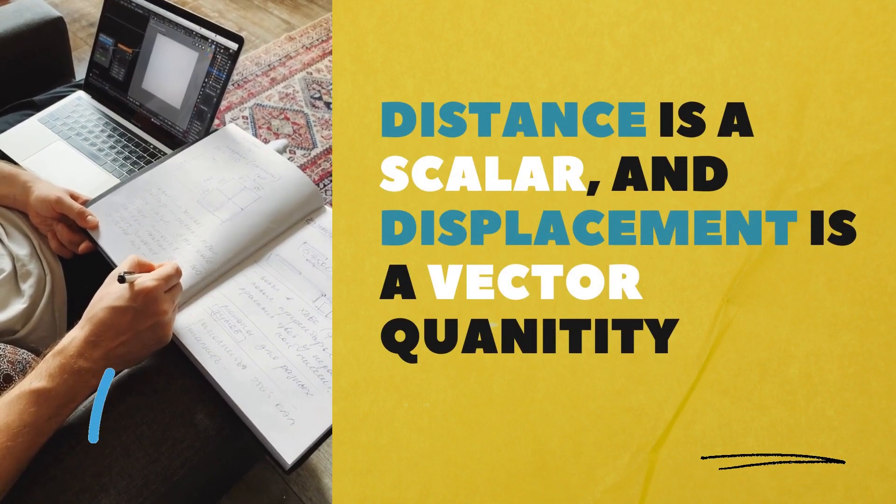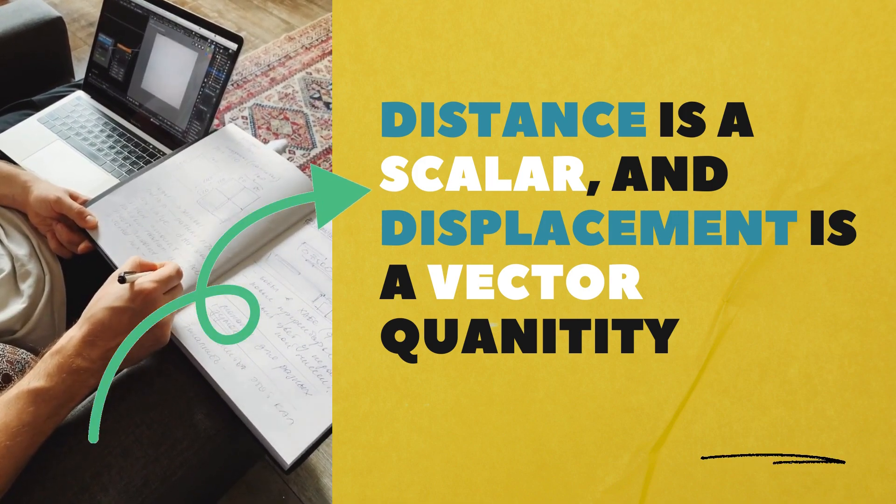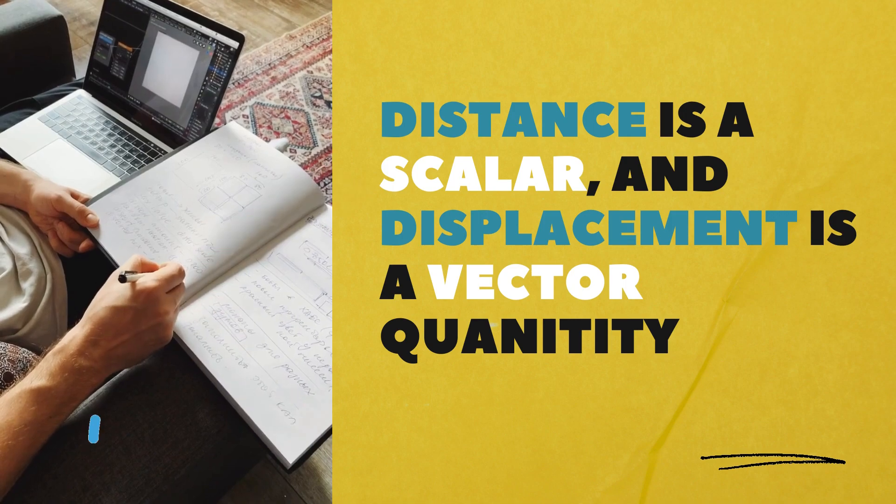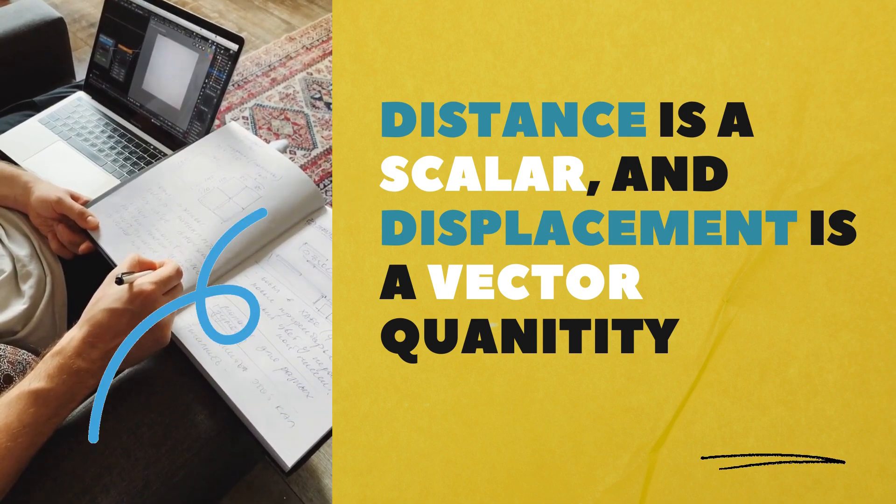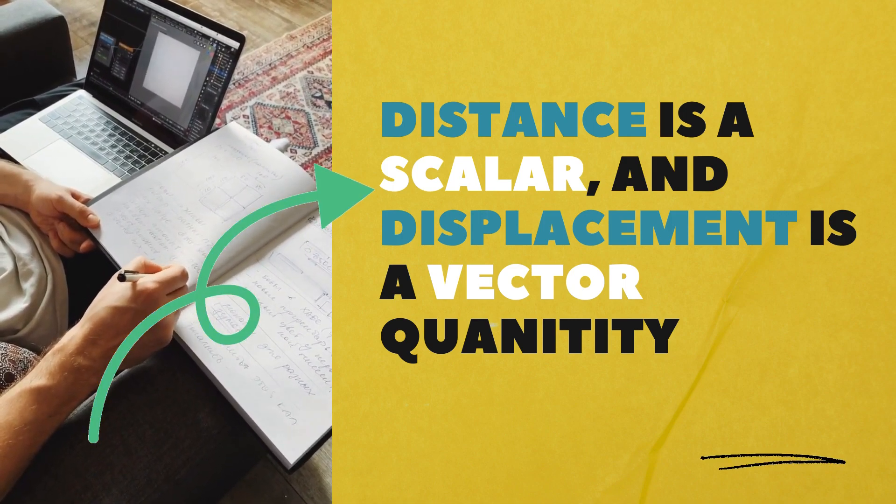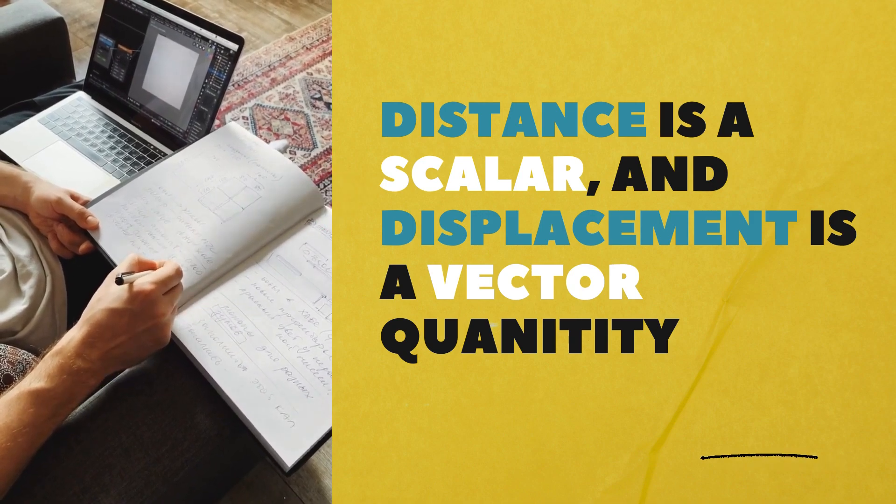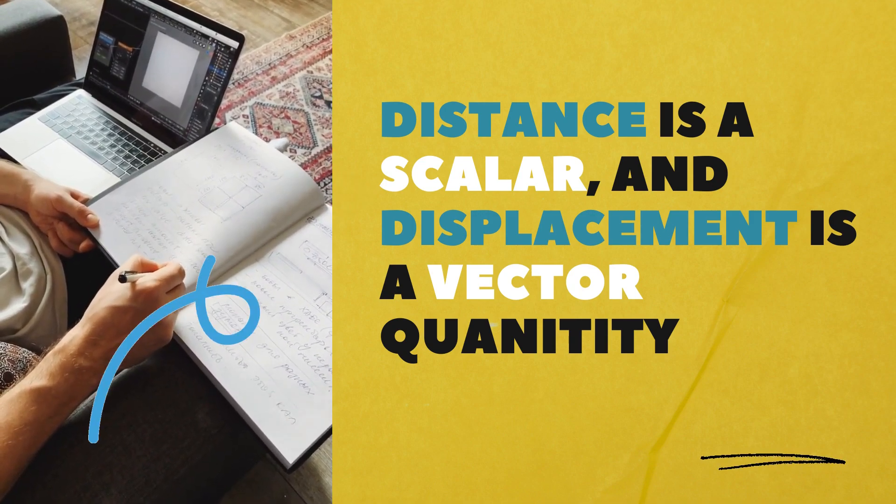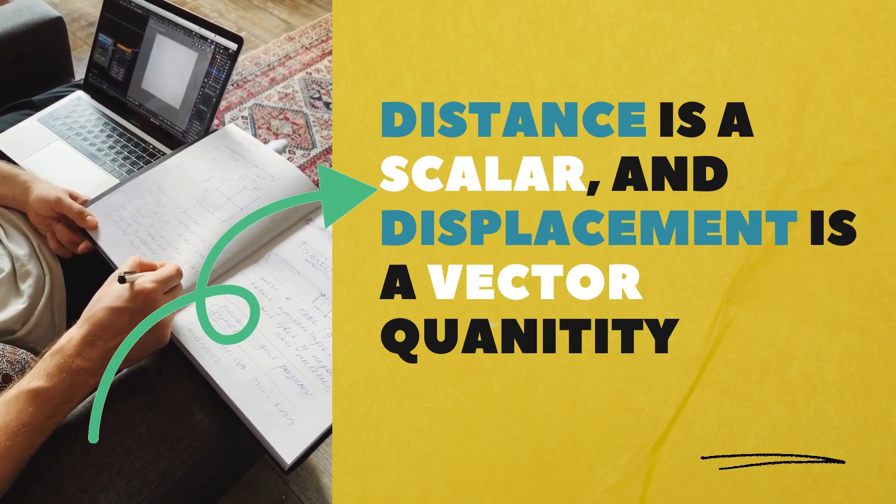Displacement is a scalar quantity. Scalar quantity is defined as the physical quantity with magnitude and no direction. Displacement is a vector quantity. Vector quantity is a quantity that has magnitude and it has direction.